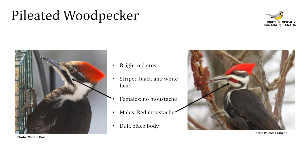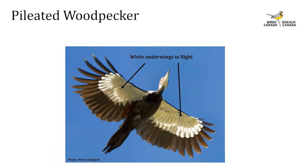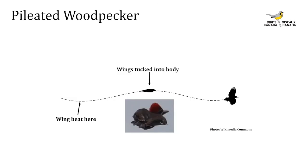The pileated woodpecker is our first species — the largest woodpecker in North America. It's most easily identified by its bright red crest and striped black and white head. Males have a red mustache directly behind their bill; females lack that mustache. Their body is completely black. In flight they can be identified by their large body and white underwings near the front edge of both wings.